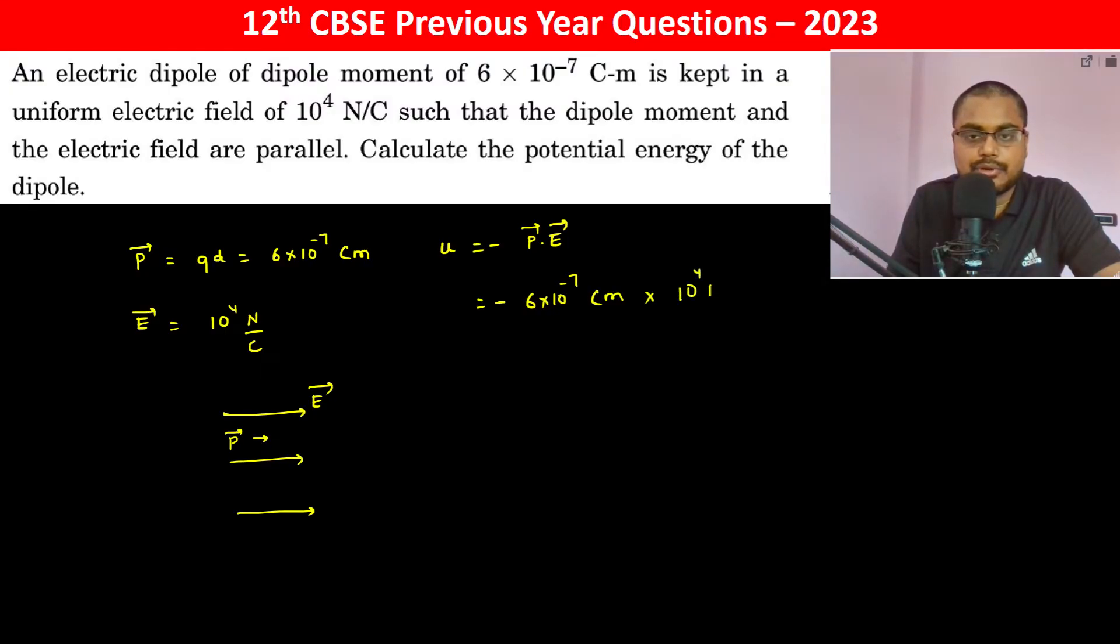E is 10 to the power 4 Newton per coulomb, and cos 0 degree because both are parallel.